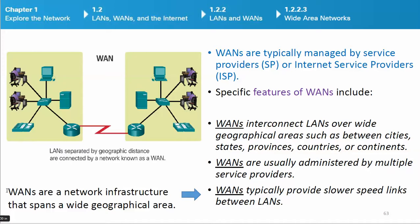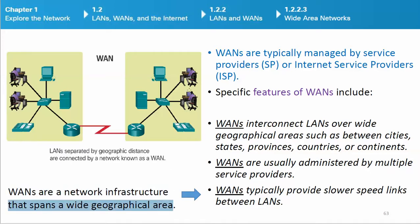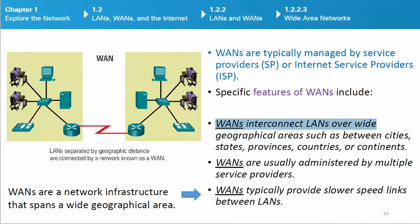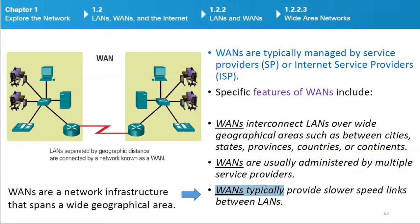Wide area networks (WANs) are a network infrastructure that spans a wide geographical area. WANs are typically managed by service providers (SP) or internet service providers (ISP). WANs interact with LANs over wide geographical areas such as between cities, states, provinces, countries, or continents. WANs are usually administered by multiple service providers and typically provide slower speed links between LANs.